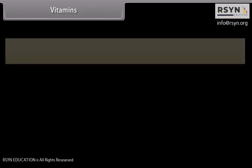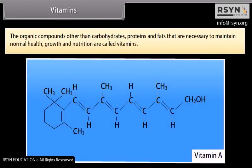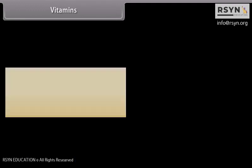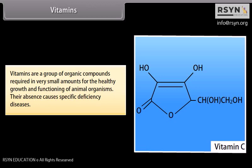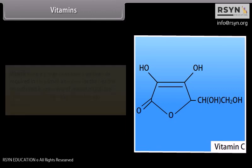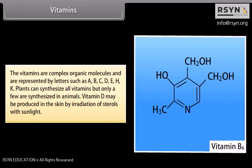The organic compounds other than carbohydrates, proteins, and fats that are necessary to maintain normal health, growth, and nutrition are called vitamins. Vitamins are a group of organic compounds required in very small amounts for the healthy growth and functioning of animal organisms. Their absence causes specific deficiency diseases. The vitamins are complex organic molecules represented by letters such as A, B, C, D, E, H, and K. Plants can synthesize all vitamins but only a few are synthesized in animals. Vitamin D may be produced in the skin by irradiation of sterols with sunlight.